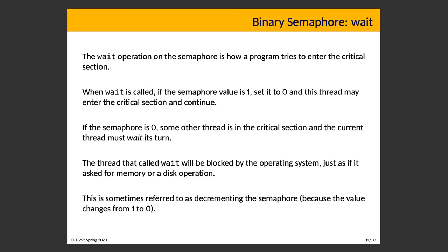We'll start with wait. The wait operation is how a program tries to enter a critical section — think of it as 'wait your turn.' When wait is invoked, if the semaphore's internal value is 1, the value is set to 0 and the thread may enter the critical section. If the semaphore is 0, another thread is in the critical section and the current thread must wait. The key is that when a thread calls wait and cannot proceed, it is blocked by the operating system — just as if it asked for memory or a disk operation. Wait is sometimes called decrementing the semaphore.